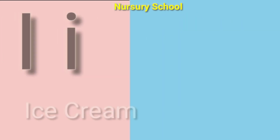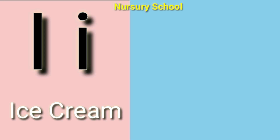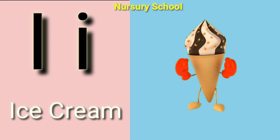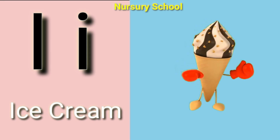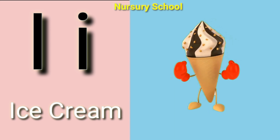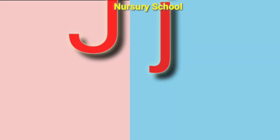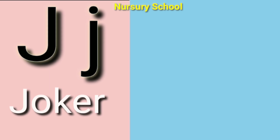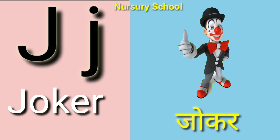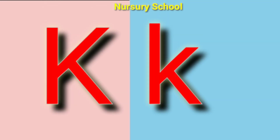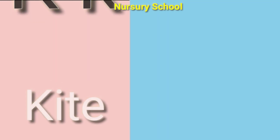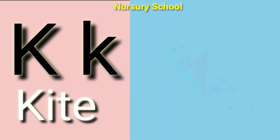I for ice cream. J for joker. K for kite, kite means patang.